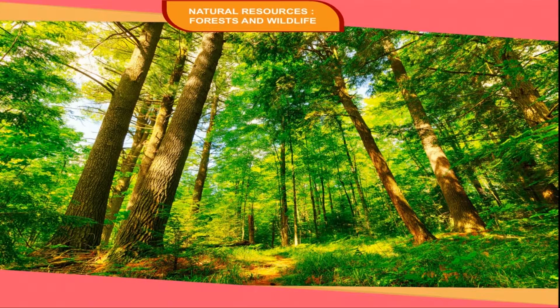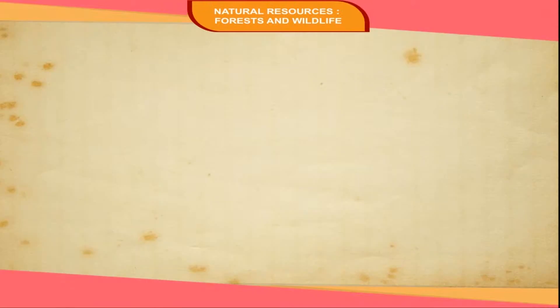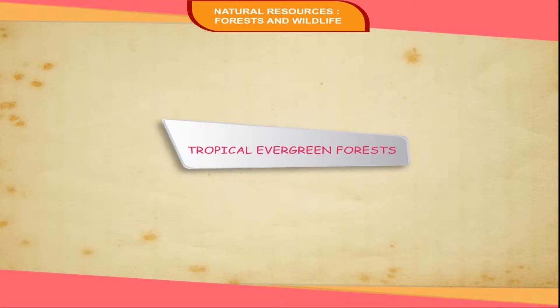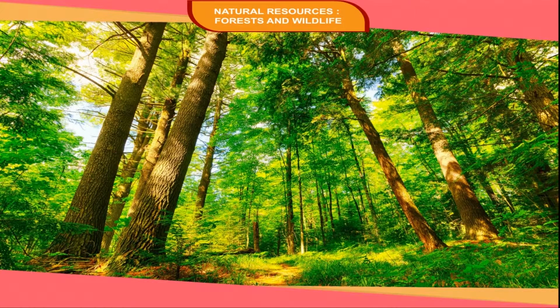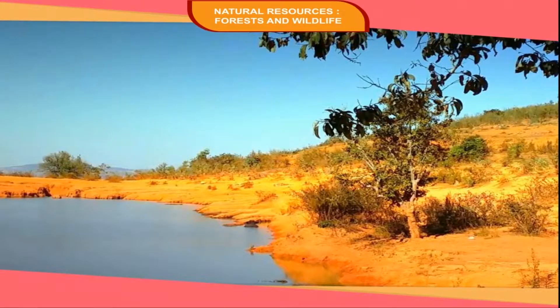Different kinds of forests in the world include Tropical Evergreen Forests. These types of forests are found in regions of heavy rainfall, close to the equator. The trees are evergreen and consist of hardwood species. The climate is hot and wet throughout the year, resulting in thick and dense tree cover. Since the vegetation cover is thick in these areas, the sunshine does not reach the ground.